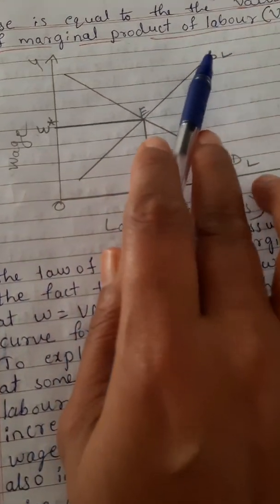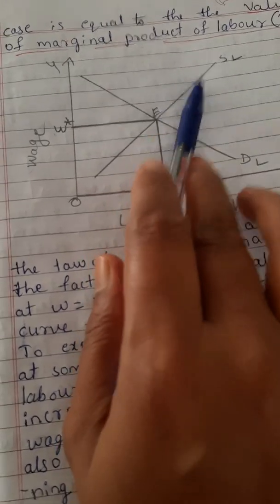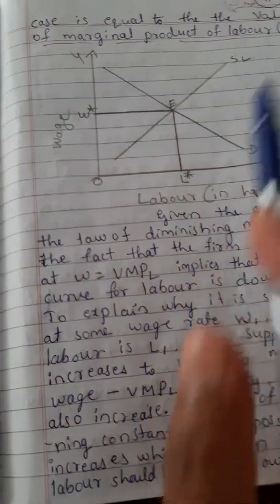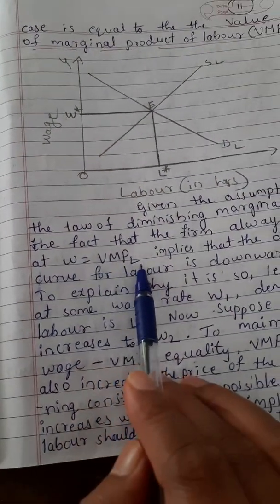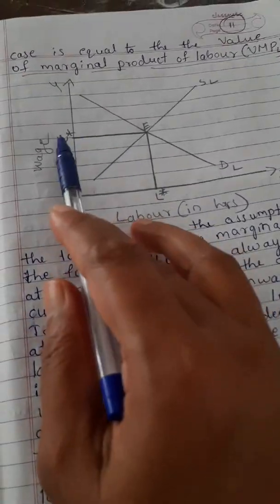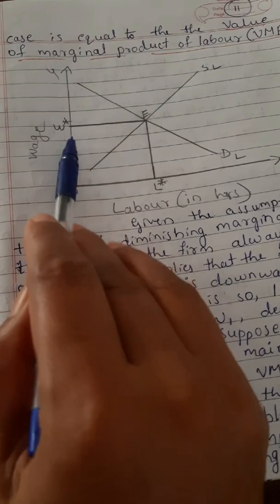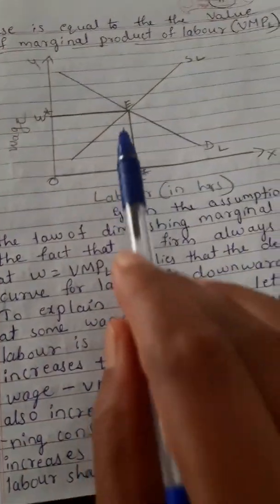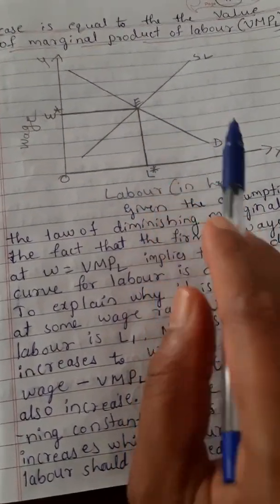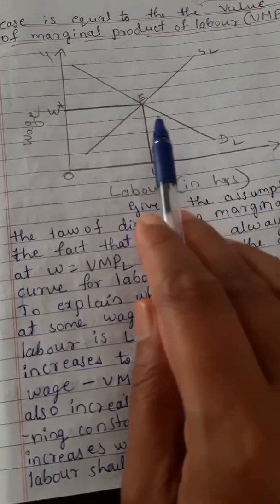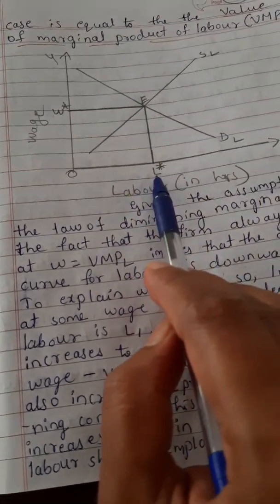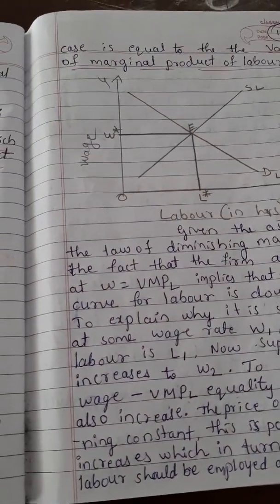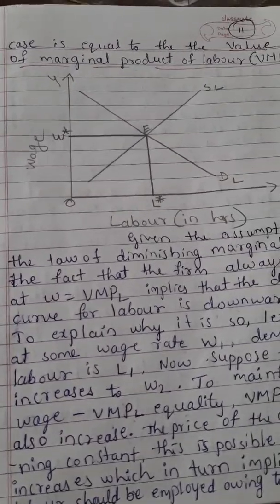This automatically affects the supply of labor to firms. In the perfectly competitive market, the equilibrium wage rate equals VMPL — the value of the marginal product of labor. At higher wages, supply of labor increases and demand decreases; at lower wages, demand is higher. The equilibrium point is where the demand and supply of labor intersect, fixing both the labor size and wage rate.